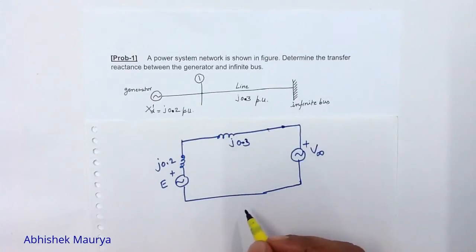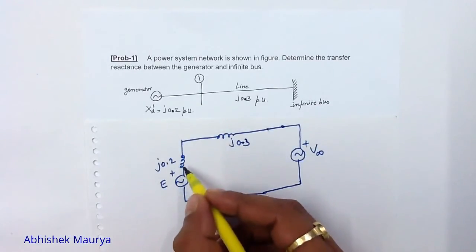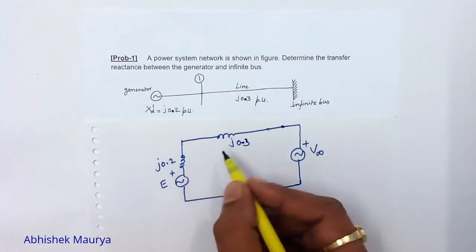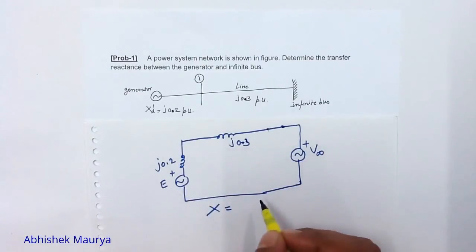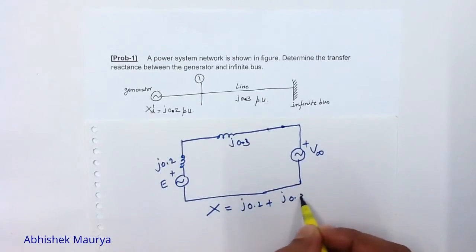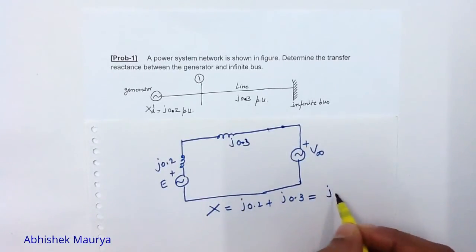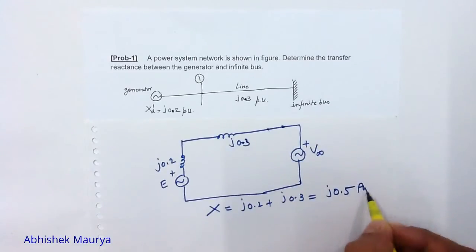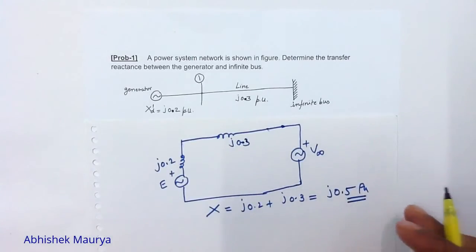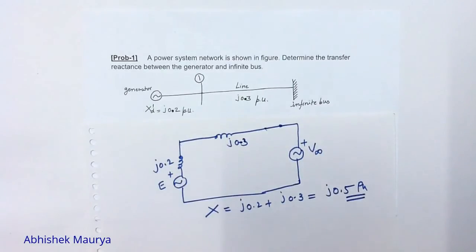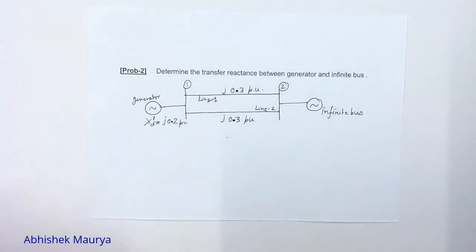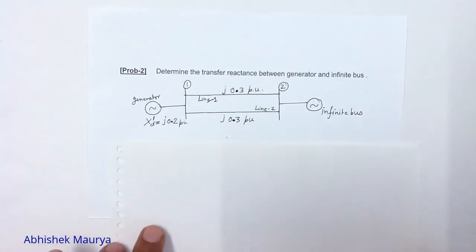Problem number one is very easy. The net reactance between the internal EMF of the generator and the infinite bus voltage is J0.2 plus J0.3, which equals J0.5 per unit. So the transfer reactance between the generator and infinite bus is J0.5 per unit.